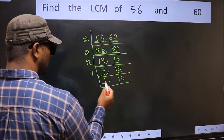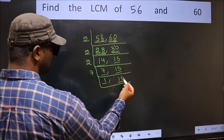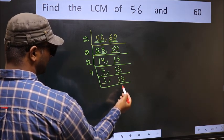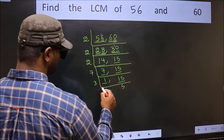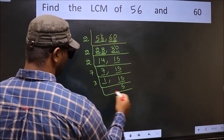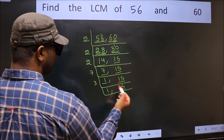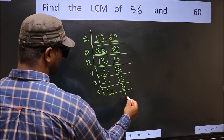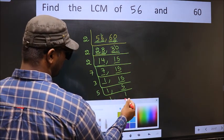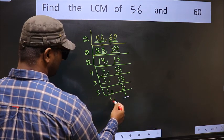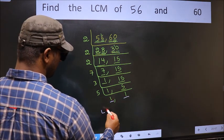Now we got 1 here. So focus on the other number, 15. 15 is 3 fives, 15. Now we have 5. 5 is a prime number, so 5 wants 5. We got 1 in both places. So our LCM...